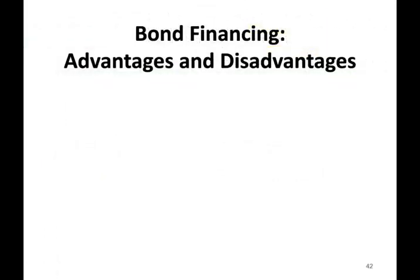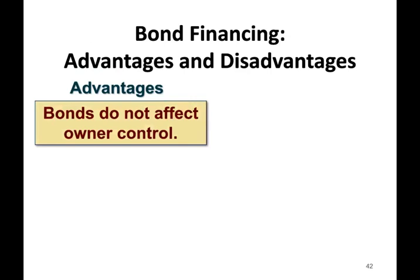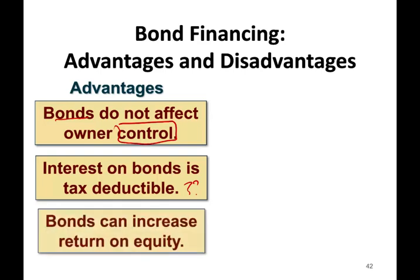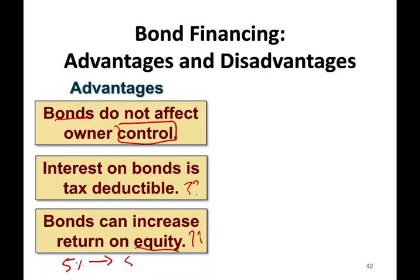The last thing we're going to look at is advantages and disadvantages of bond financing. Bond financing is borrowing money. The advantages: first, bonds do not affect owners' control — if you issue bonds to raise money, you don't have to issue stocks, so the control of current shareholders is not affected. Second, interest on the bond is tax deductible — when you pay interest, it reduces your taxable income, which in turn reduces your taxes. Also, bonds can increase your return on equity — if you're borrowing money at 5% and using it in projects that earn 8%, you are better off as a company.